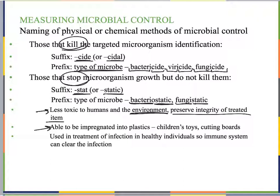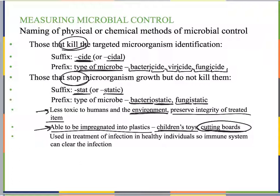Bacteriostatic chemicals can be impregnated into plastics. We see this in children's toys and cutting boards — two examples where it's put into plastic to decrease the spread of pathogens. This is particularly important with plastic cutting boards that have bacteriostatic chemicals in them. We can make sure we're stopping pathogen growth, wash them, and hopefully there won't be enough growth to cause disease.